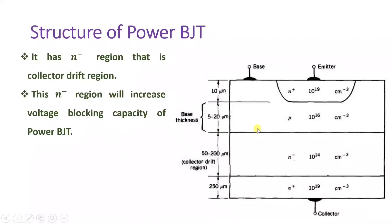When this BJT is in on-state, there will be higher current handling capacity because of the N+ higher doping at the emitter and collector side for the NPN transistor. Because of these additional features, Power BJT handles more voltage, more current, and ultimately more power.